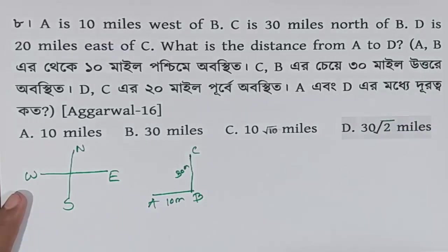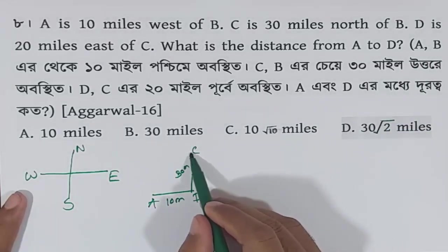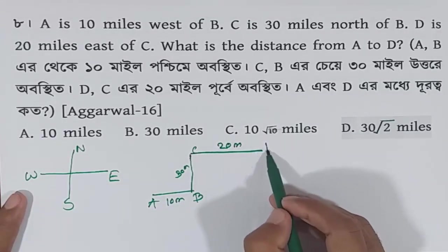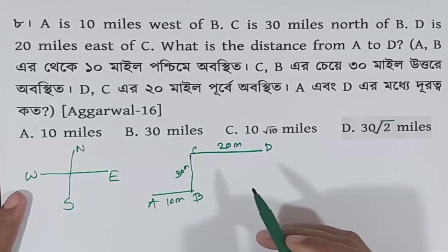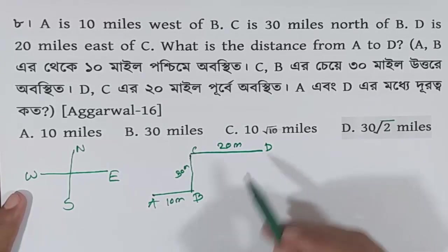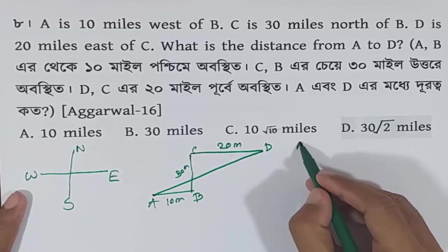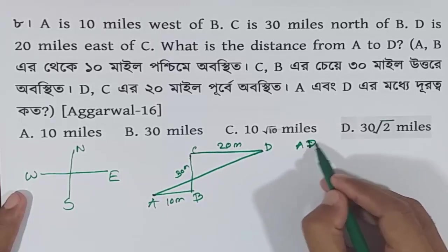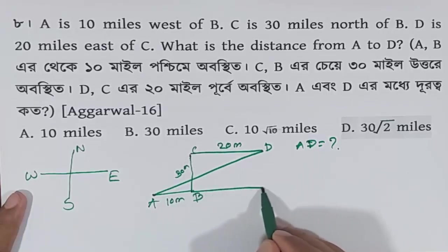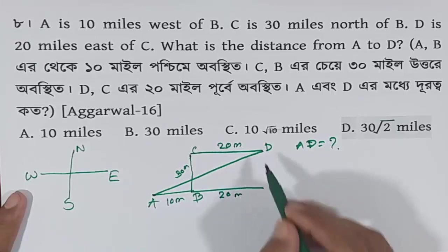We need to find the distance from A to D. D is 20 miles east of C. So we set up the coordinate geometry to find the straight-line distance from A to D.